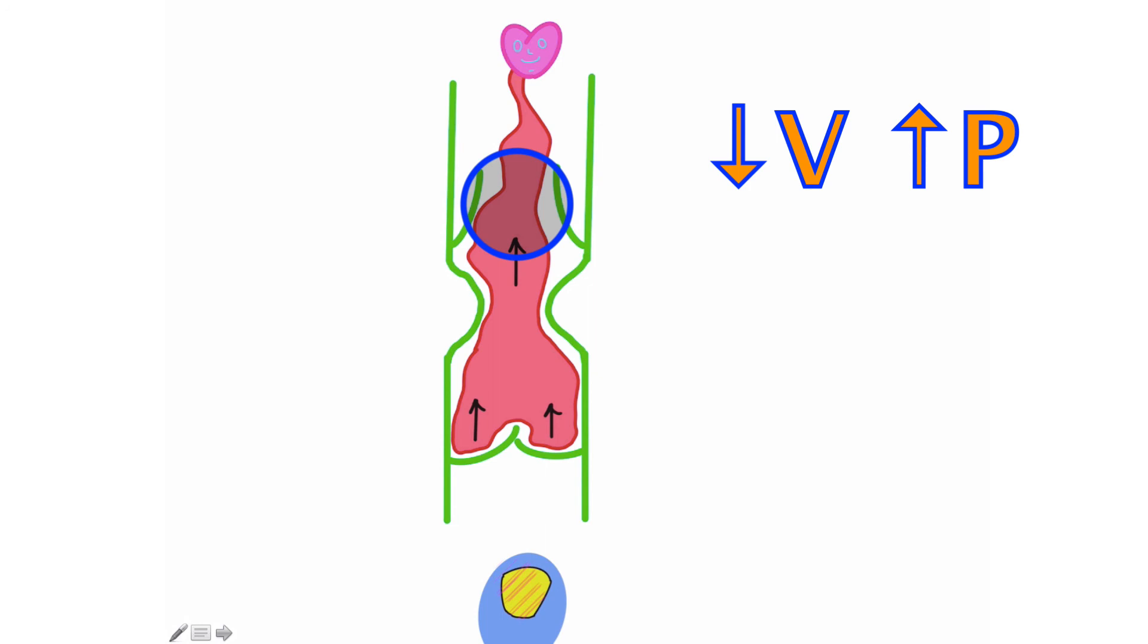So, the skeletal muscle pump is the contraction of skeletal muscle in the limbs, mainly the legs, that squeeze veins, decrease the volume of the veins, increases the pressure, pushes the blood superiorly up towards the heart.